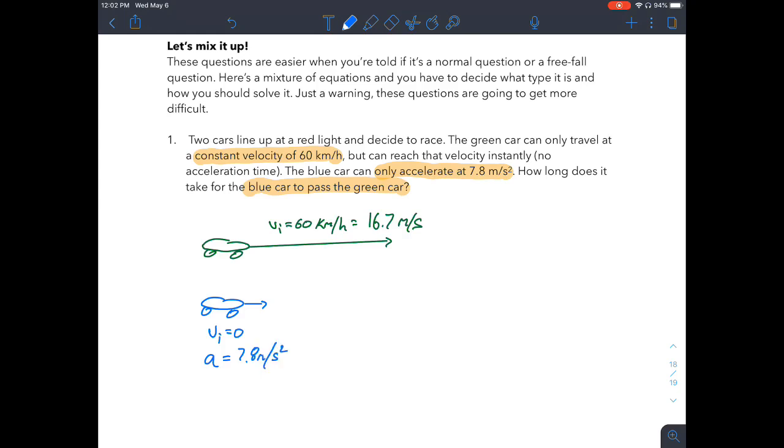So initially, it's not going to be moving very fast. It's going to be going pretty slow over here. But by the time this car gets over here, it's going to be going very fast and it's probably going to be going a lot faster than the green car. So how long does it take for this blue car to overtake the green car?